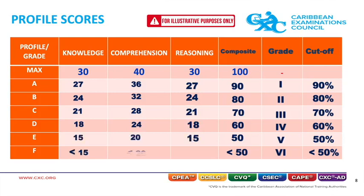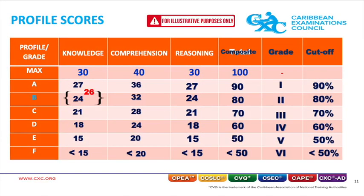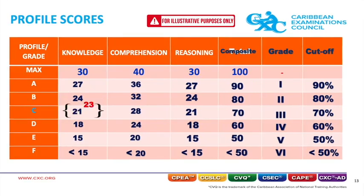From the table, the maximum composite score for the subject is 100 marks with paper 2 removed. The maximum score for knowledge and reasoning is 30 marks, and the maximum score for comprehension is 40 marks. Each profile has a letter grade A to F, as this is a CSEC subject. Each letter grade is associated with a range of scores that contributes to the final grade awarded. For knowledge and reasoning: A ranges from 27 to 30 marks, B ranges from 24 to 26 marks, C ranges from 21 to 23 marks, and so on.